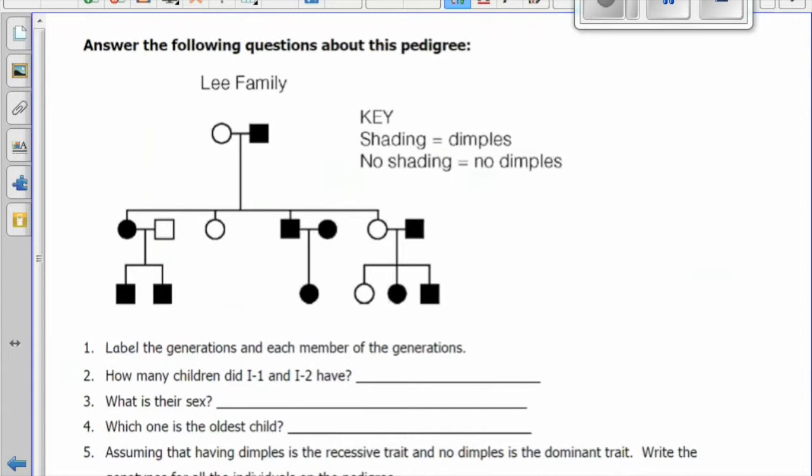When we're figuring out a pedigree, first of all, we need to know the generations. The generations are labeled with Roman numerals. In this case, we have three generations. And then each member of the generation is labeled with an Arabic numeral.